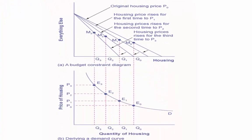The demand curve graphs each combination of the price of housing and the quantity of housing demanded. Indeed, the quantities of housing are the same at the points on both upper and lower graphs. Thus, the original price of housing P0 and the original quantity of housing Q0 appear on the demand curve as point E0. The higher price for housing P1, and the corresponding lower quantity demanded for housing Q1, appear on the demand curve as point E1.